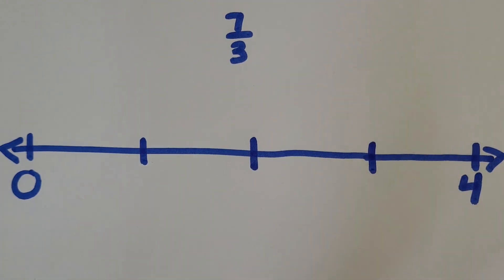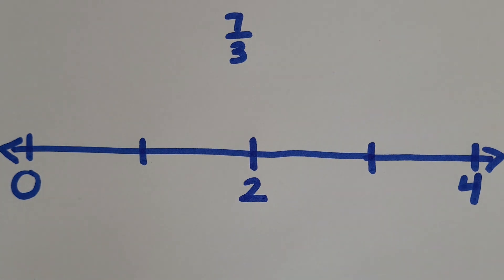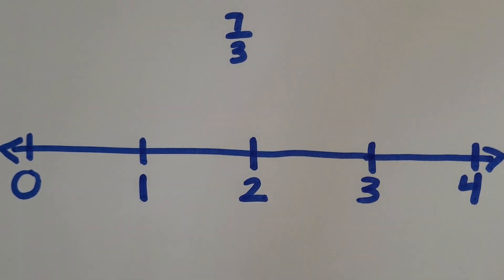So with our four holes this time, the middle is going to represent two. And then when you partition each side in half, that first tick mark on the left will be one hole and the tick mark on the right would be three holes.